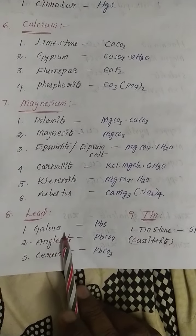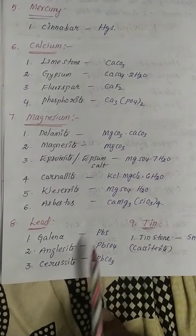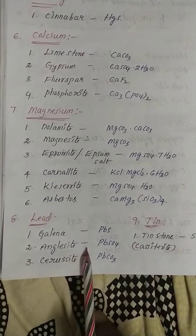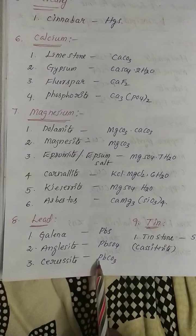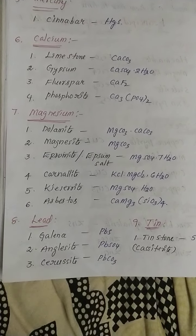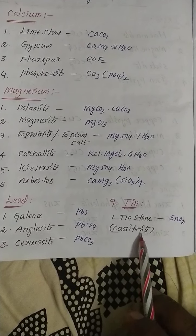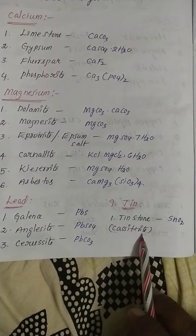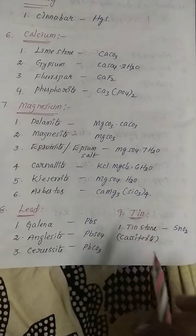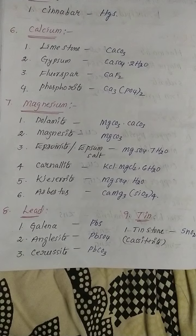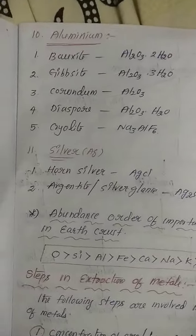Next is lead. Galena is lead sulphide (PbS). Note that cinnabar is mercuric sulphide and galena is lead sulphide. Anglesite is PbSO₄ and cerussite is PbCO₃. For tin, there is only one important ore: cassiterite, commonly known as tin stone, with formula SnO₂.